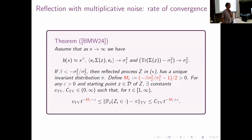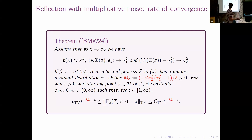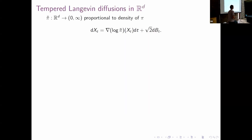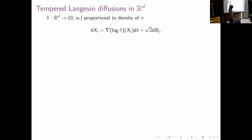This introduces a natural question: can we compare two diffusions with the same invariant measure—one with additive noise and one with multiplicative noise—and see if multiplicative noise can impact convergence to stationarity? The easiest model to study in this context is tempered Langevin diffusions. Consider a smooth density pi on R^d; then a Langevin diffusion is a diffusion whose invariant measure has density pi.